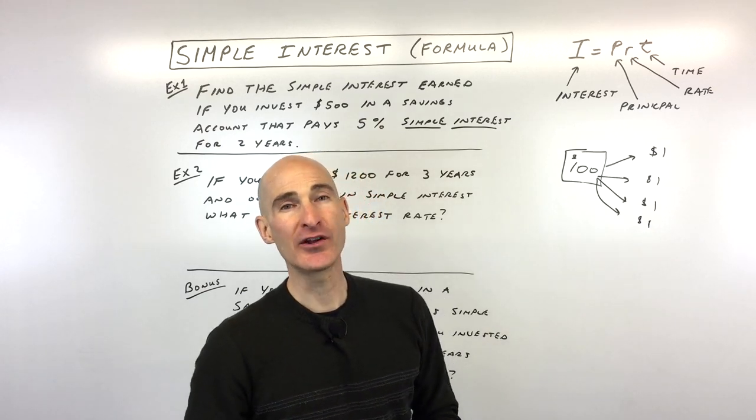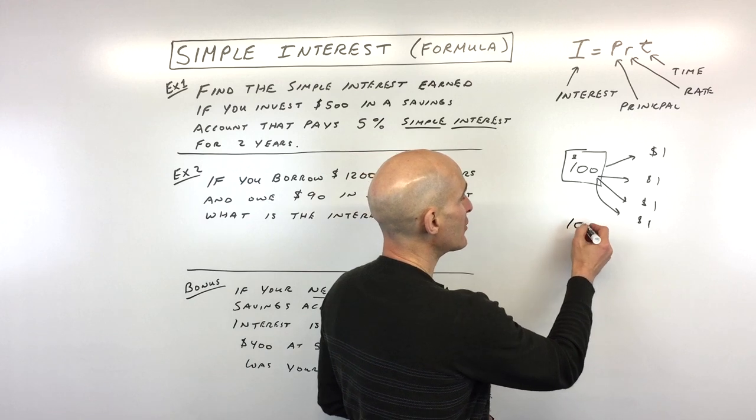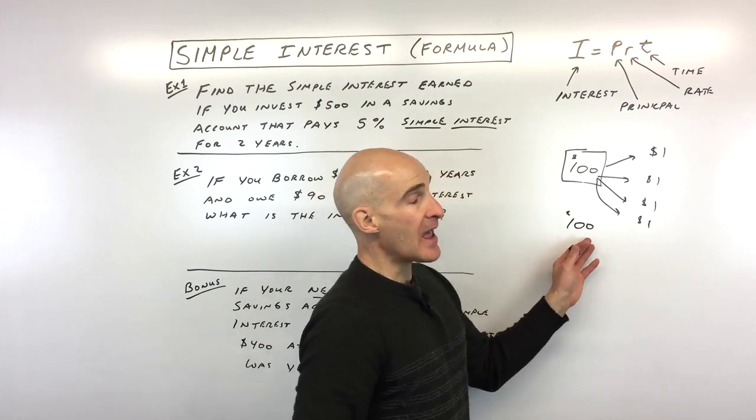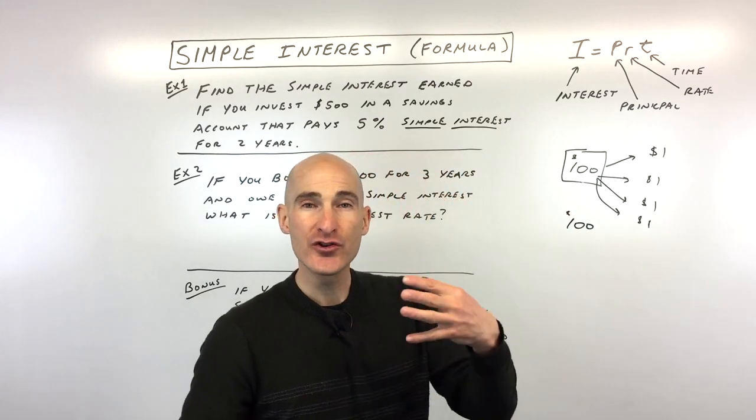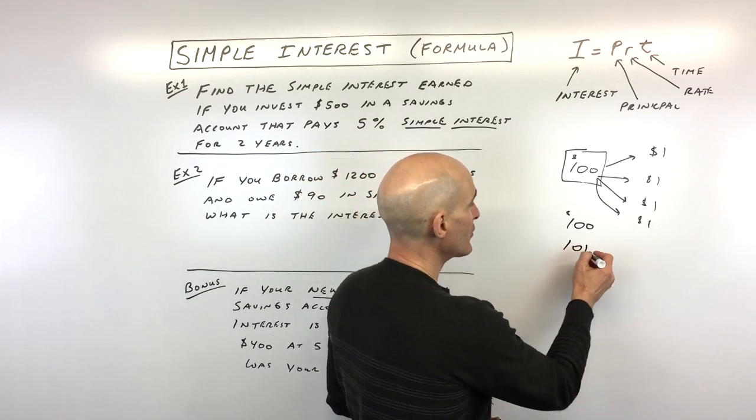The way compound interest works is that you start off with that $100 investment. At 1%, after a year, you're going to have $101.